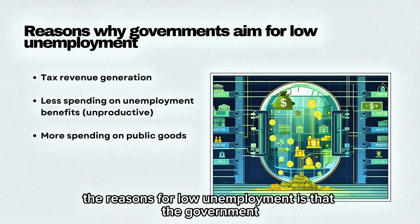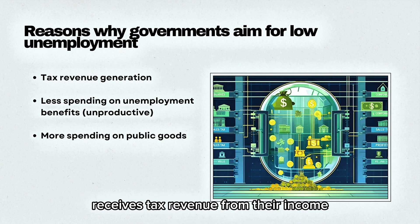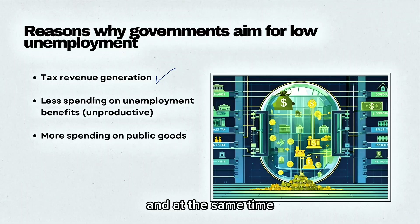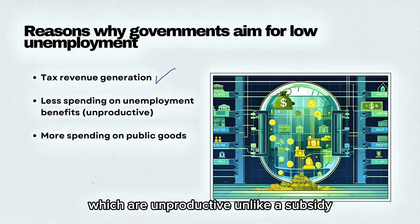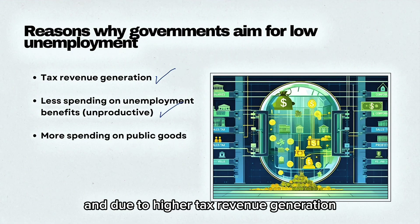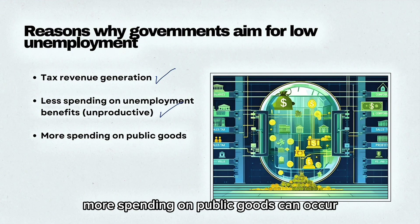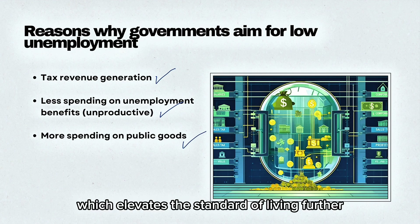The reason for low unemployment is that the government receives tax revenue from income, and at the same time they don't need to spend on unemployment benefits, which are unproductive unlike a subsidy. Due to higher tax revenue generation, more spending on public goods can occur, which elevates the standard of living further.